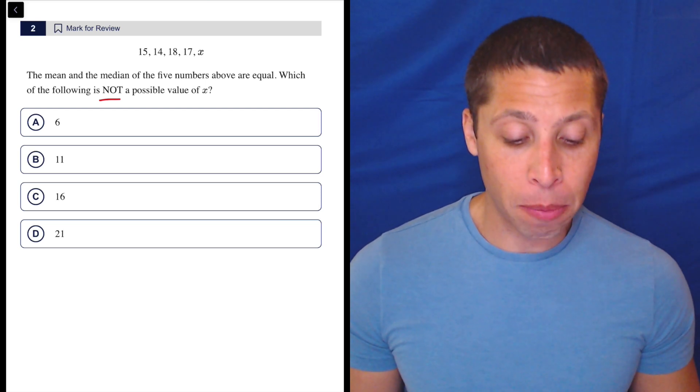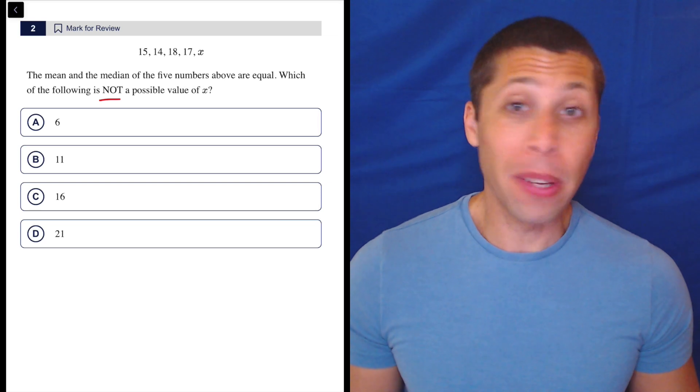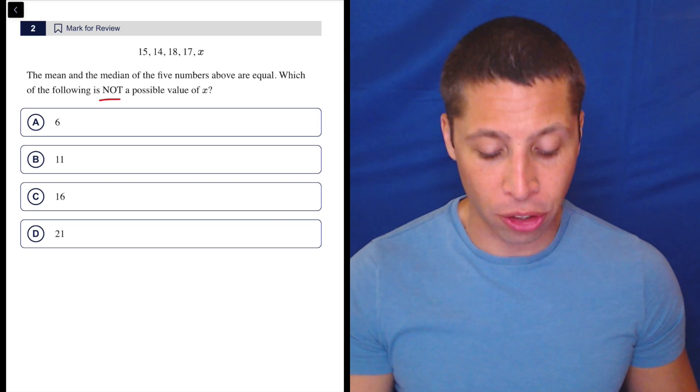The mean and the median of the five numbers above are equal. Which of the following is not a possible value of X? Sometimes people miss that, even though it's obviously very distinctive in the question.